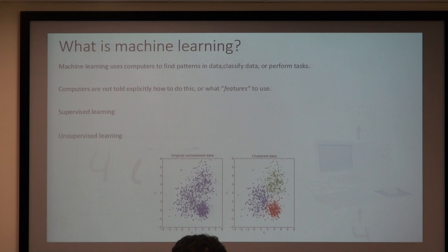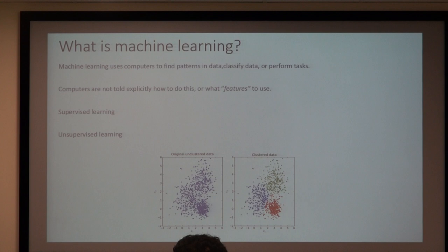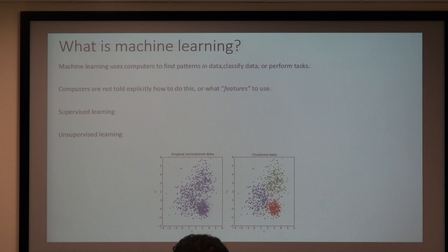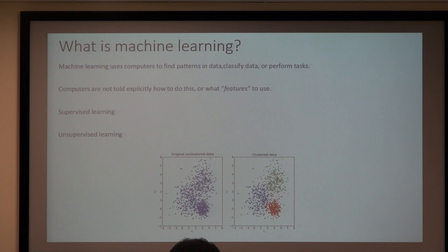The next big class of algorithms is unsupervised algorithms. With supervised learning you had gold-standard labels; with unsupervised learning you don't. A classic example is clustering. If you have this data, you might ask whether these data points are typical of a single distribution or three distributions. You can do this by clustering using an algorithm like k-means clustering, which gives this result—that's unsupervised because there are no labels involved.